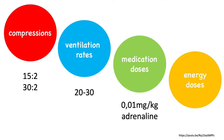The energy dose for defibrillation is also different for kids. If you've got an AED, you'll use one with a pediatric dose attenuator. If not, then you'll use the adult pads. If we've got a manual defibrillator, we'll use a dose of 2 to 4 joules per kg.